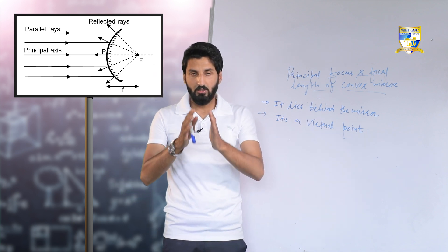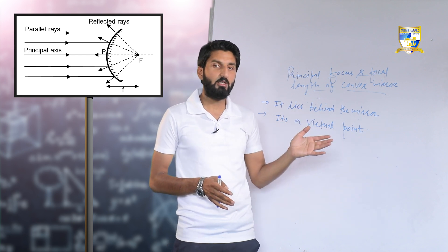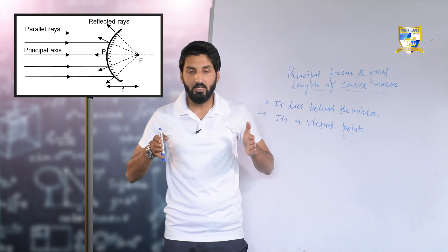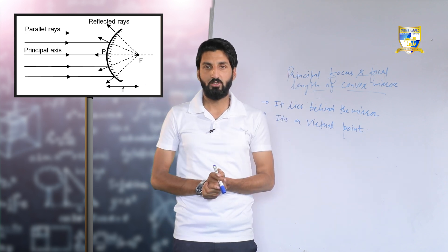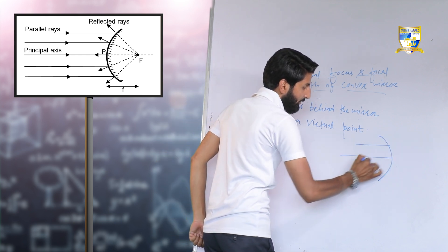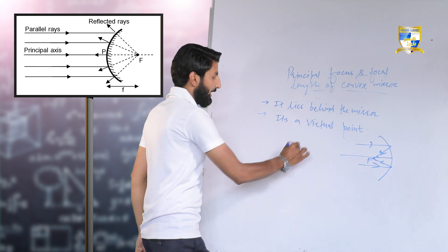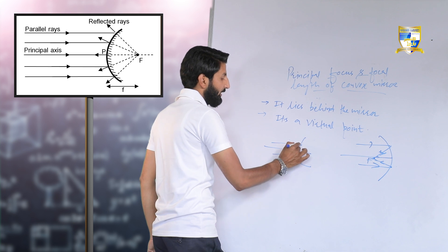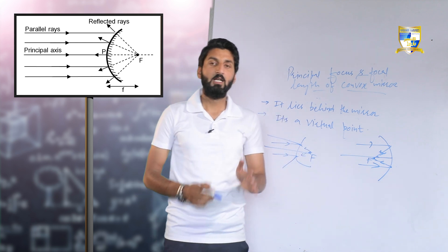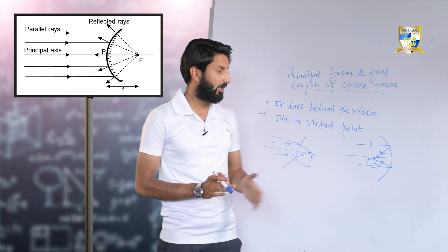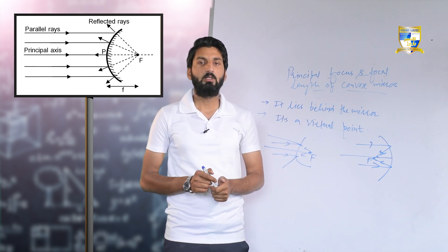In the case of a concave mirror, the principal focus is a real point where the rays of light actually meet. In the case of a convex mirror, the principal focus is a virtual point where from the rays of light appear to diverge. The rays of light parallel to the principal axis of a concave mirror meet at a common point — that is the principal focus of the concave mirror. For a convex mirror, those rays appear to diverge from a common point behind the mirror — that is the principal focus of the convex mirror. Focal length is the distance between the pole and the focus. I hope it's clear.